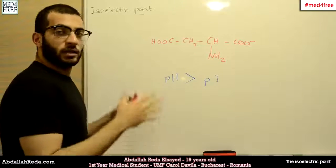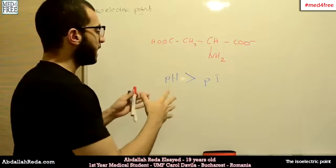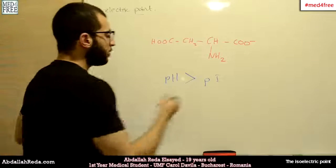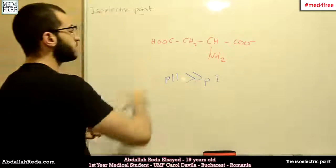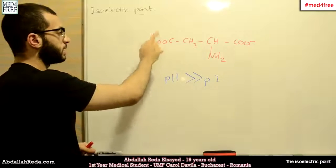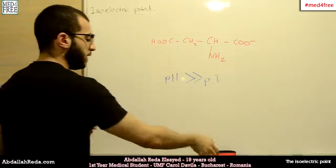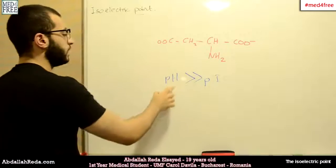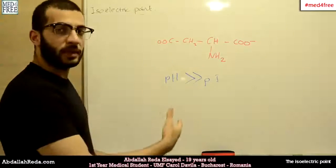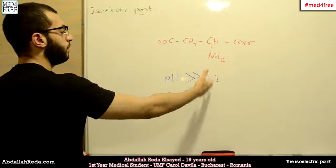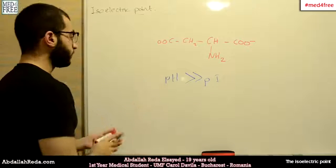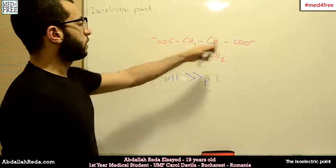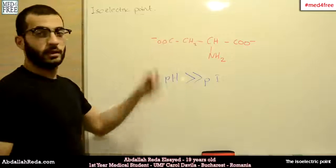In the previous case we had three steps: pH less than, equal to, and more than the PI. But here, when the pH is far more than the PI, there is still another carboxylic group with an H attached. To make that carboxylic group lose its H, we need to raise the pH far higher than the PI of the amino acid. In that case, both carboxylic groups will lose their hydrogens.